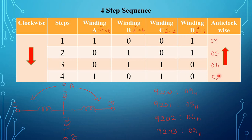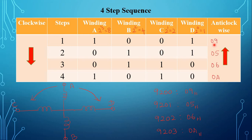These data are stored at addresses 9200, 9201, 9202, and 9203. Address 9200 is the starting data address. For anti-clockwise direction, the data sequence is 08, 06, 05, and 09, stored at addresses 9200 through 9203. So for clockwise direction the data is 09, 05, 06, 08, and for anti-clockwise the data is 08, 06, 05, 09.